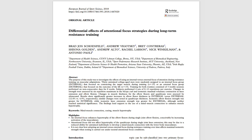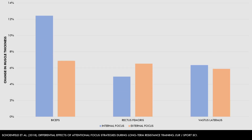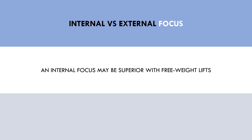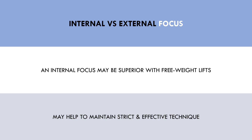One group trained with an internal focus while the other trained with an external focus. It was found that biceps hypertrophy was superior with the internal focus, although quad hypertrophy was similar between groups. These results are probably because the barbell curl is subject to a high degree of compensation while the leg extension is almost impossible to cheat because you are locked in position. So in movements where there is potential to deviate from strict and effective technique, using an internal focus may be more relevant. I don't see any downsides to using an internal focus, so I would personally prefer an internal focus with all exercises.